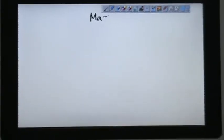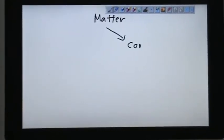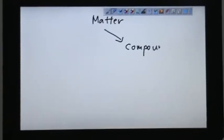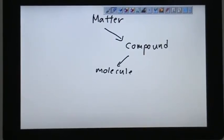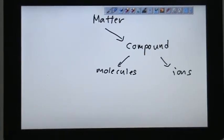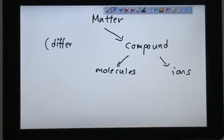So another type of matter is compound. When we talk about compound, we are talking about molecules and ions.